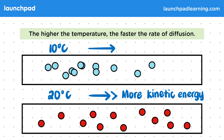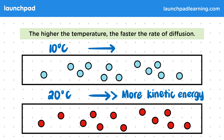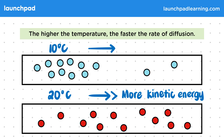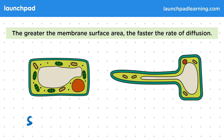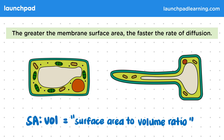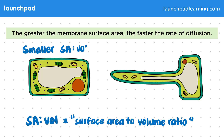Now let's look at how differences in surface area of the membrane affect the rate of diffusion. The greater the membrane surface area, the faster the rate of diffusion. 'SA to vol' is shorthand for surface area to volume ratio. Here you can see two examples of plant cells — the one on the left has a smaller surface area to volume ratio and the one on the right has a greater surface area to volume ratio.